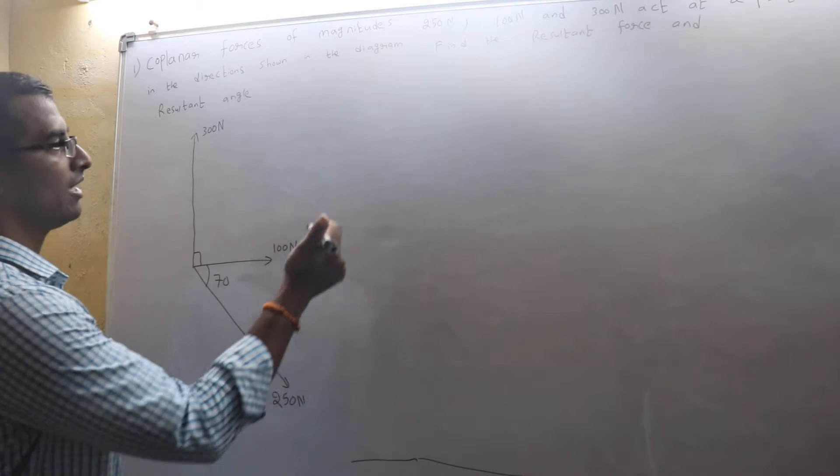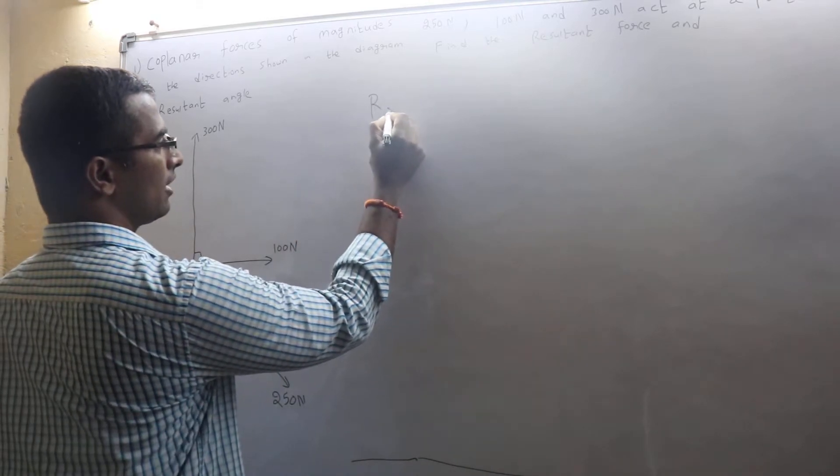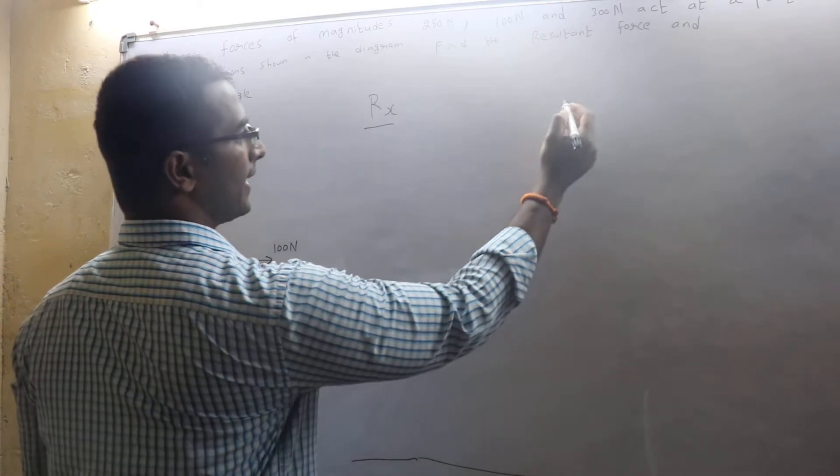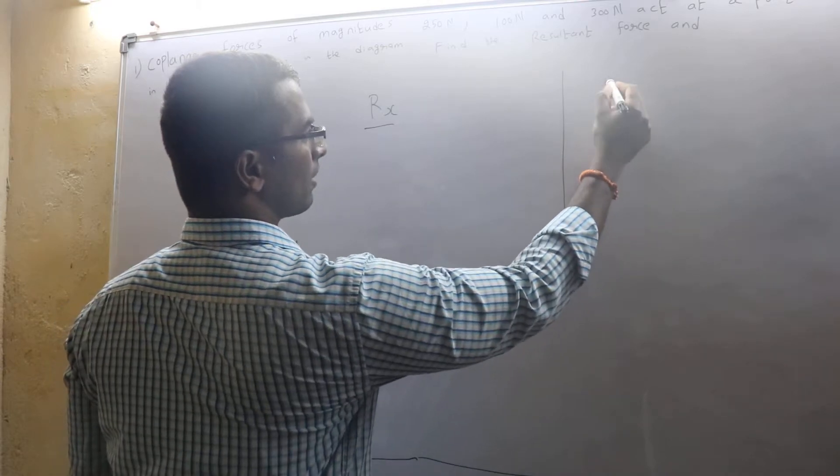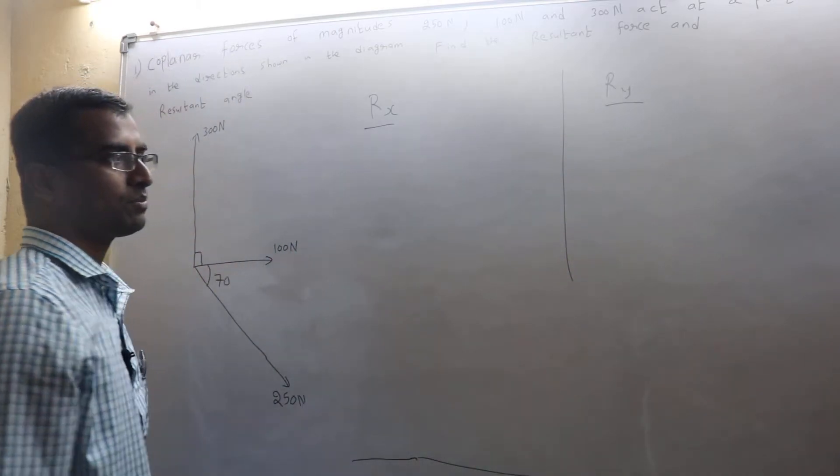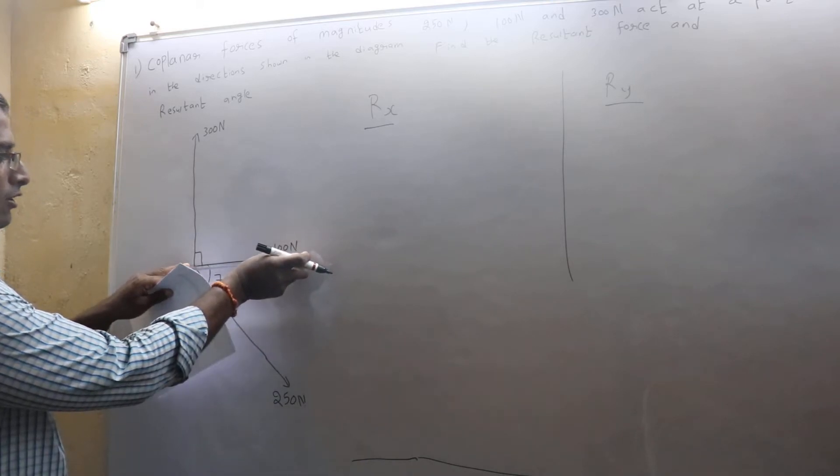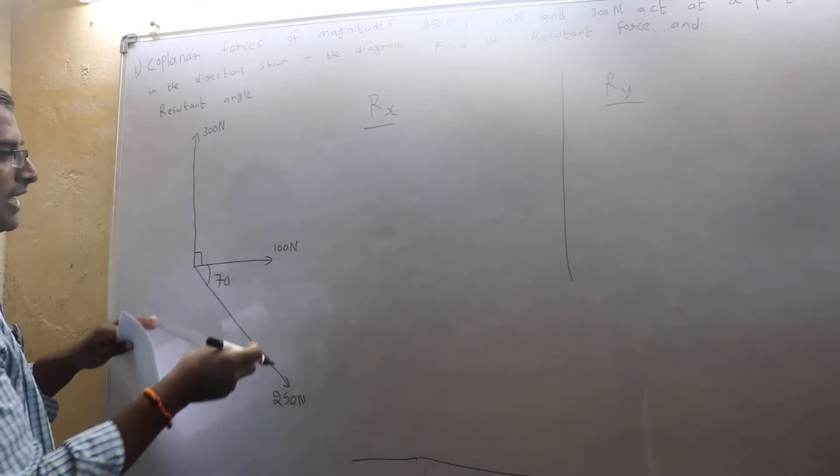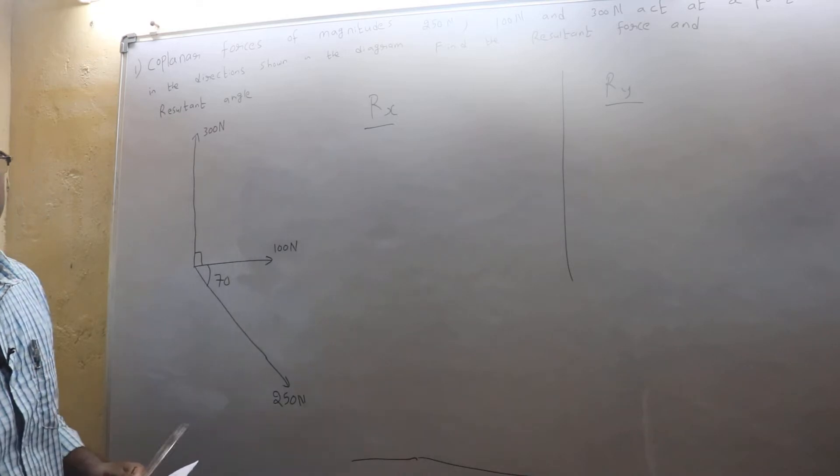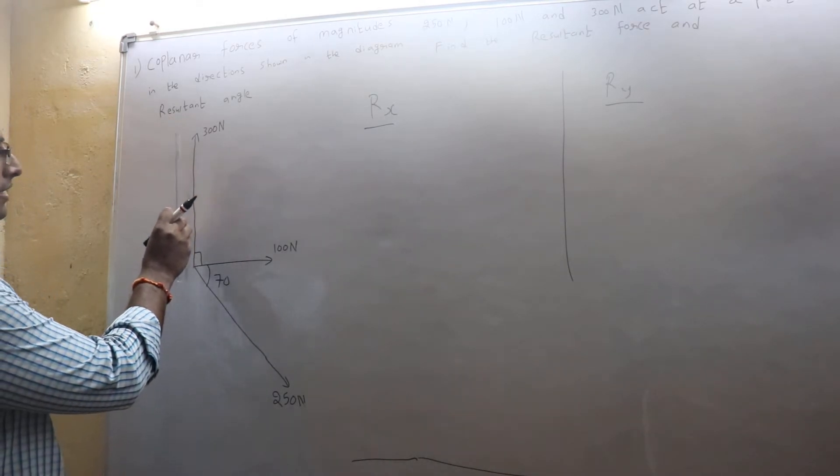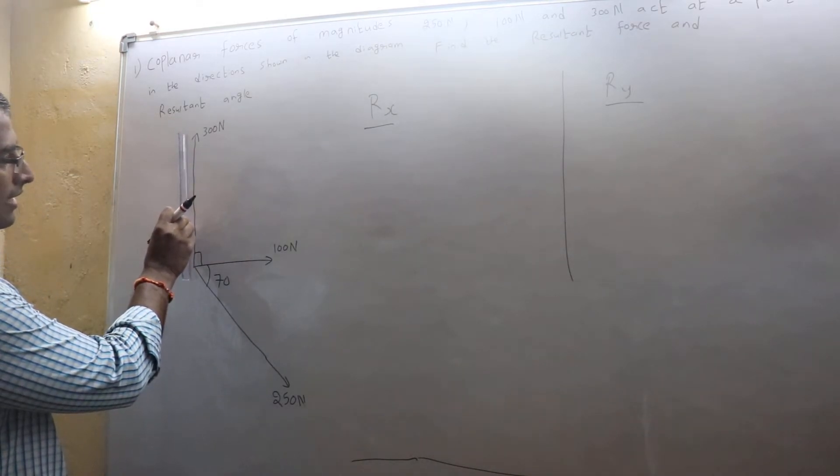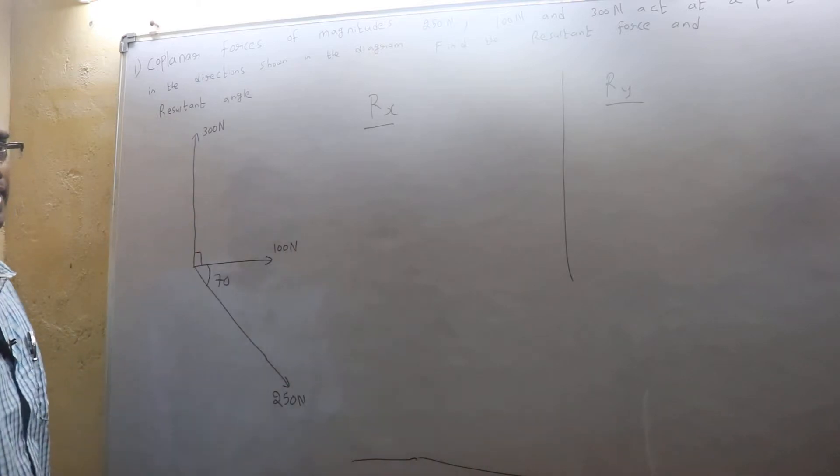First step, you need to resolve horizontally and also vertically. Now over here, the 100 newtons is acting horizontally so I will not resolve 100. Over here, 300 newtons is acting vertically, so no need for you to resolve 300 as well.